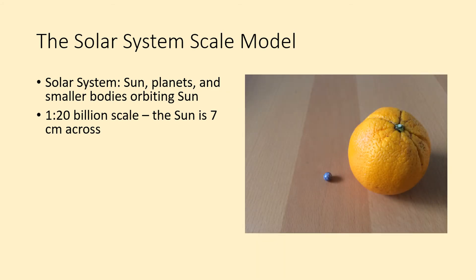The largest planet orbiting the Sun is Jupiter. On the scale we're using, Jupiter is only seven millimeters across, about the size of this bead.